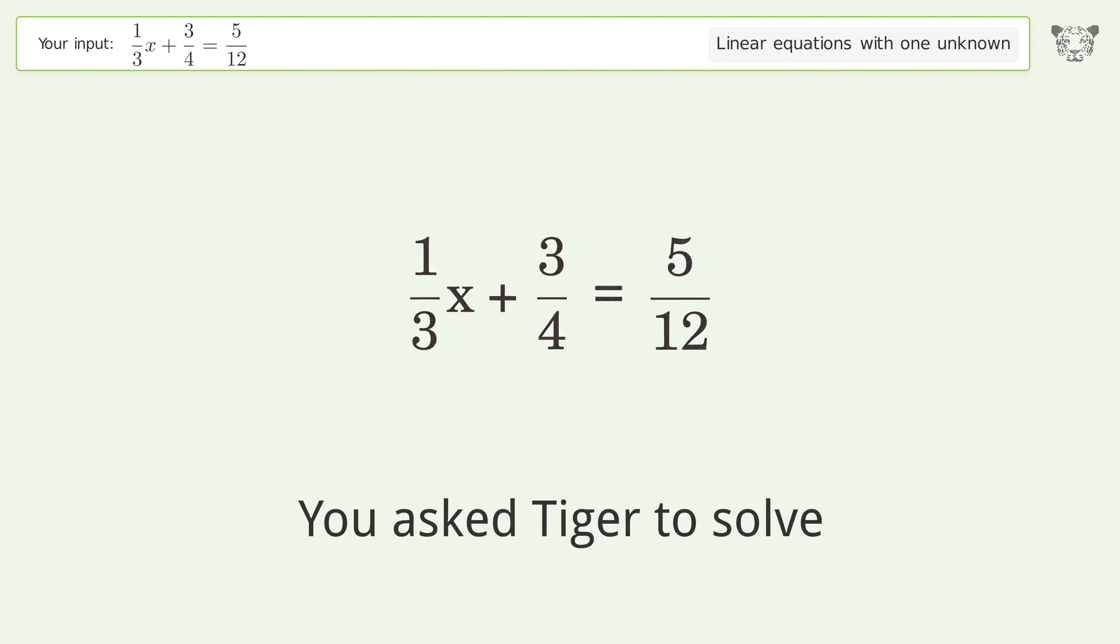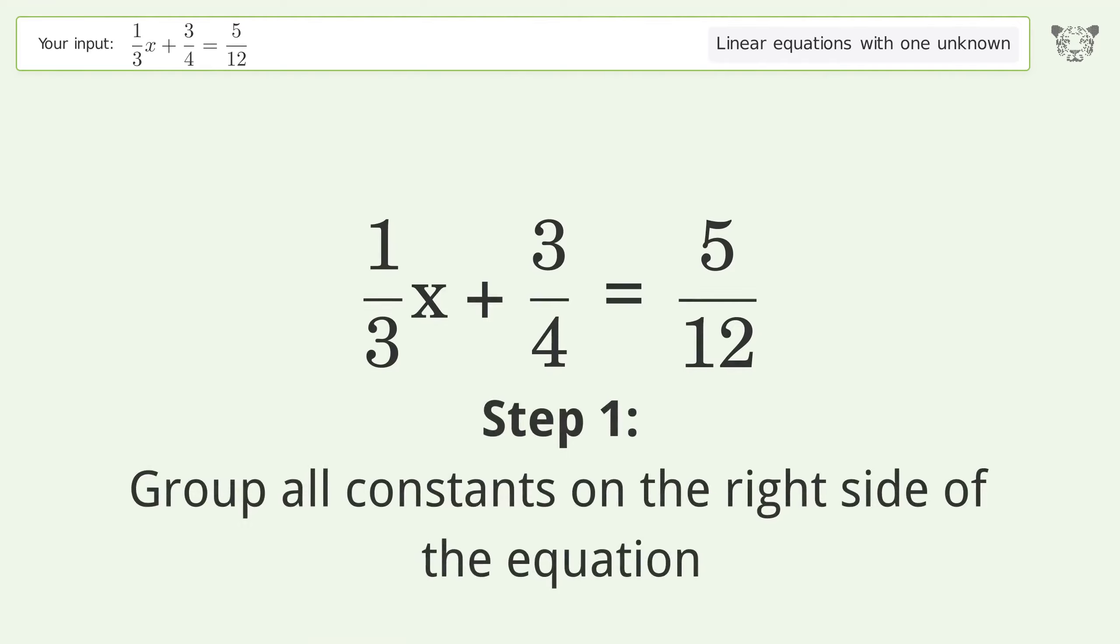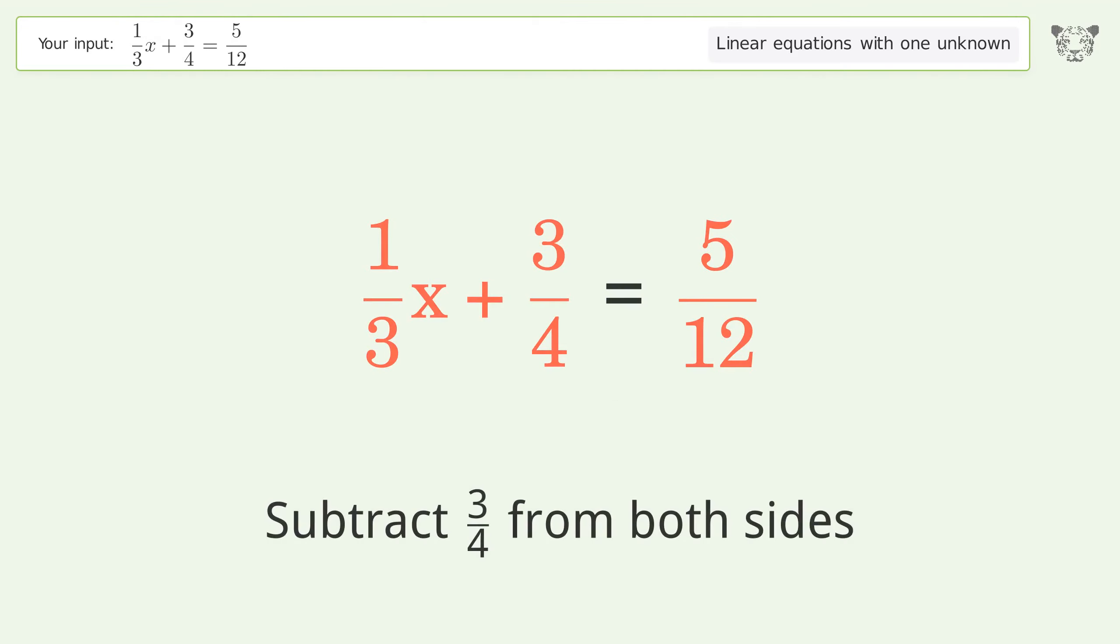You asked Tiger to solve this linear equation with one unknown. The final result is x equals negative 1. Let's solve it step by step. Group all constants on the right side of the equation. Subtract 3/4 from both sides.